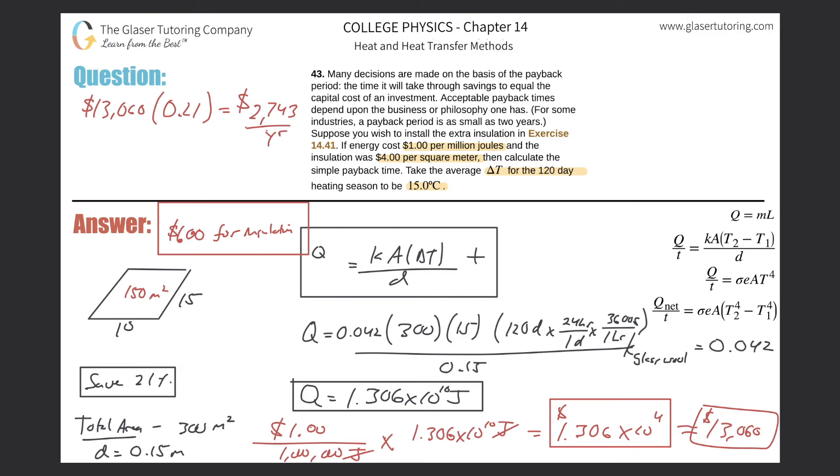So now we can find the payback time. If we know we had to lay out 600 for the insulation and this is the amount we're saving per year, then all I would do is take the amount of the insulation and divide it by the amount of savings per year, which is 2,743. The years would come up to the top and we would get our payback period. So it's 600 divided by 2,743, which is about 0.22 years.